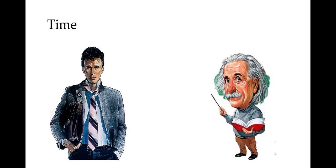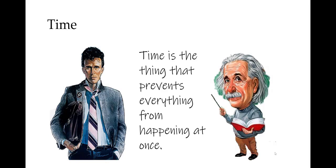Now we have to consider what are referred to as kinematic variables. The first kinematic variable to consider is time. I like the definition attributed to both Buckaroo Banzai and Albert Einstein: time is the thing that prevents everything from happening at once.